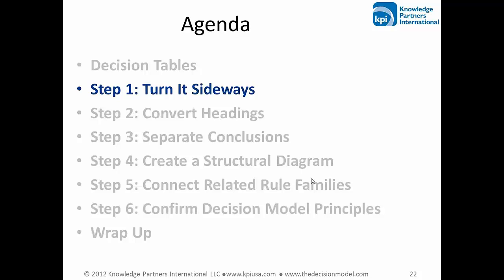We'll walk through the six transformation steps using this decision table as a starting point, pointing out which principles each step applies and why each step is important. Step one is to start with the decision table and turn it sideways. Step one is related to principle number one — the tabular principle — which states that the fundamental structure of a decision model is called a rule family, and it has two dimensions: a heading and a body. Because a decision table already has a heading and body, it's a good starting point.